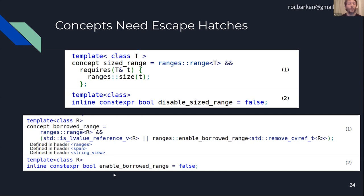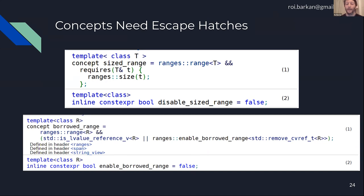Another type of escape hatch in C++20 is one that's not opt-out but opt-in: enable_borrowed_range. A borrowed_range concept has syntactic requirements, but also a semantic requirement whose default is false. Whoever implements their range, if they think their range is borrowed, they have to proactively go and specialize enable_borrowed_range to become true.